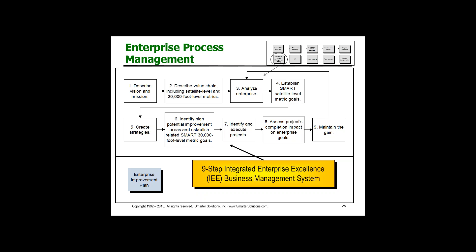Now let's talk about how we might have improvement efforts so that the enterprise as a whole benefits. If we drill down on the value chain, I've got something called enterprise process management. This is a nine-step business system. Step one is vision and mission — this describes what you do in the organization and where you're going. Step two is your value chain — what you do and how you measure what you do. Step three is analyze the enterprise: look for bottlenecks, look at how the customer is performing, examine your value chain metrics. Then create SMART — Specific, Measurable, Actionable, Relevant, Time-based — satellite or financial metric goals.